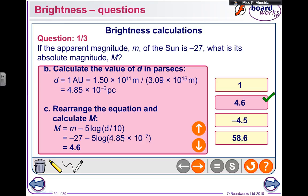And then, because they divided by 10 already, and then you would divide it by 10. So 4.85 times 10 to the power of minus 7. This would give you 4.6. There are no units for magnitudes. Another question.